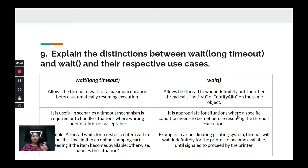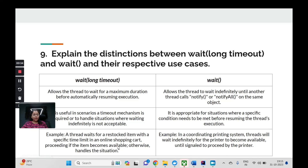An example of wait(timeout): a thread waits for a restocked item in a shopping cart for a specific time limit, proceeding if the item becomes available or handling the situation otherwise. An example of simple wait(): a printing system waits for the printer to become available until it receives the signal — it should not proceed without that signal. These represent the key differences between wait with timeout and wait without timeout.